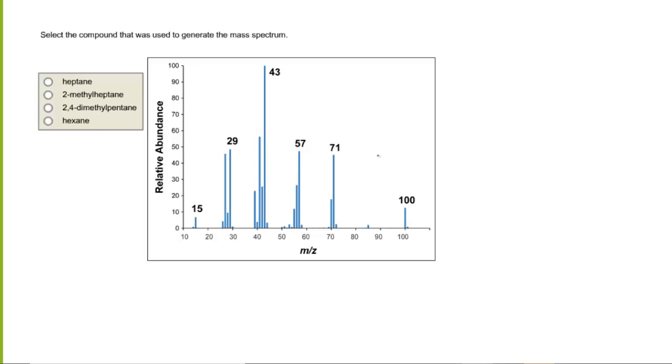In this question, we must select the compound that was used to generate the given mass spectrum. Typically, the first thing that you want to look at for any mass spec is the signal that is located on the very far right of the diagram. This signal right here is known as the molecular ion, and the molecular ion will give you the molecular mass of your unknown molecule.